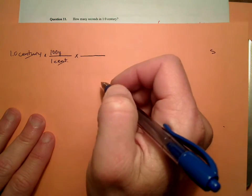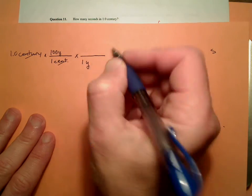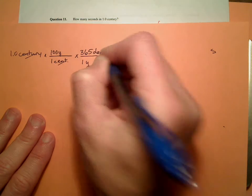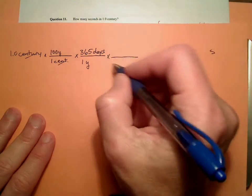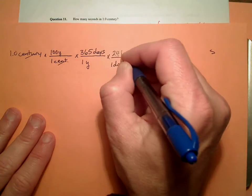Now we go from years to days because that's better than months. So we can say one year is 365 days. We'll ignore leap years for this moment. One day is 24 hours.